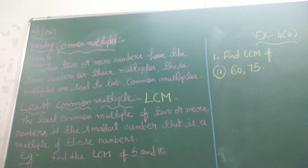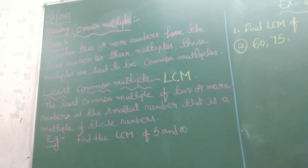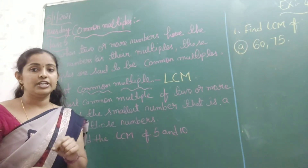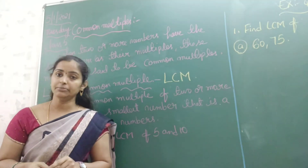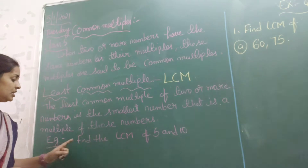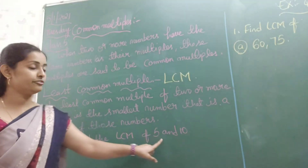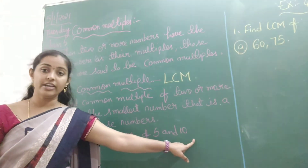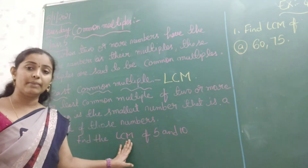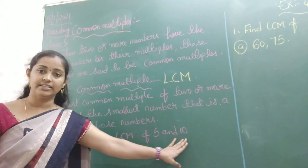Now let us see one example. Here, first what we need to find out — we need to find out the multiples of a given number. Let us take the example: find the LCM of 5 and 10. So we need to find out the least common multiple of the numbers 5 and 10.